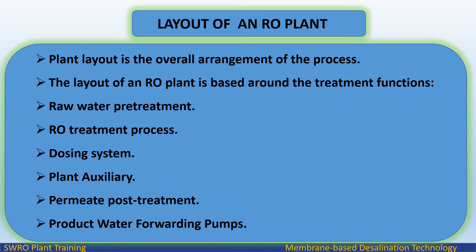Plant layout is the overall arrangement of the process. The layout of an RO plant is based around the treatment functions: raw water pretreatment, RO treatment process, dosing system, plant auxiliary system, permeate post-treatment, and product water forwarding pumps. Generally, seawater RO plants require more space than brackish water plants.